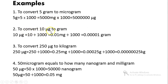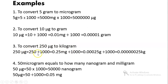Another example: Convert 10 micrograms to grams. First convert to milligrams, then to grams — divide by 1000 once to get milligrams, then divide by 1000 again to get grams. Another example: Convert 250 micrograms to kilograms. Divide by 1000 to get milligrams, divide by 1000 again to get grams, then divide by 1000 once more to get kilograms.